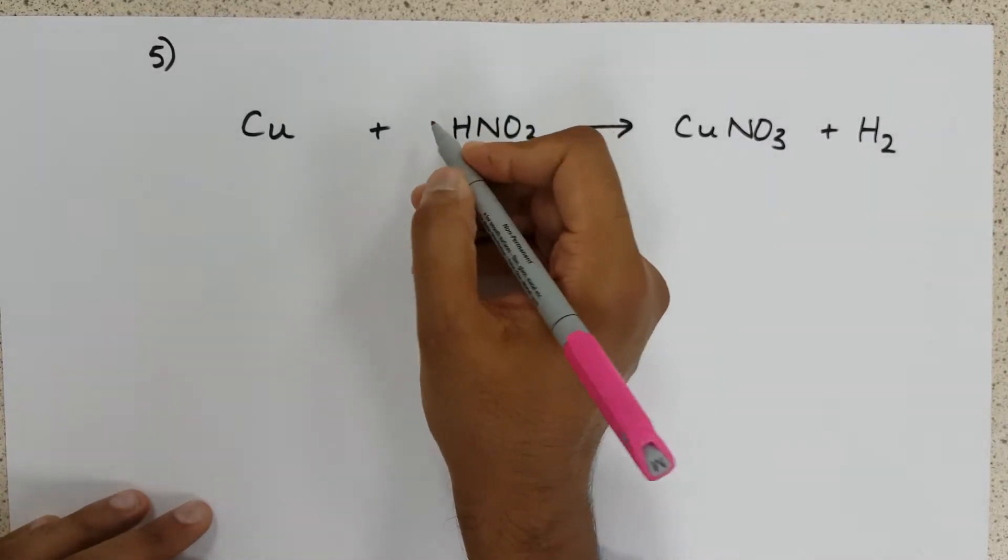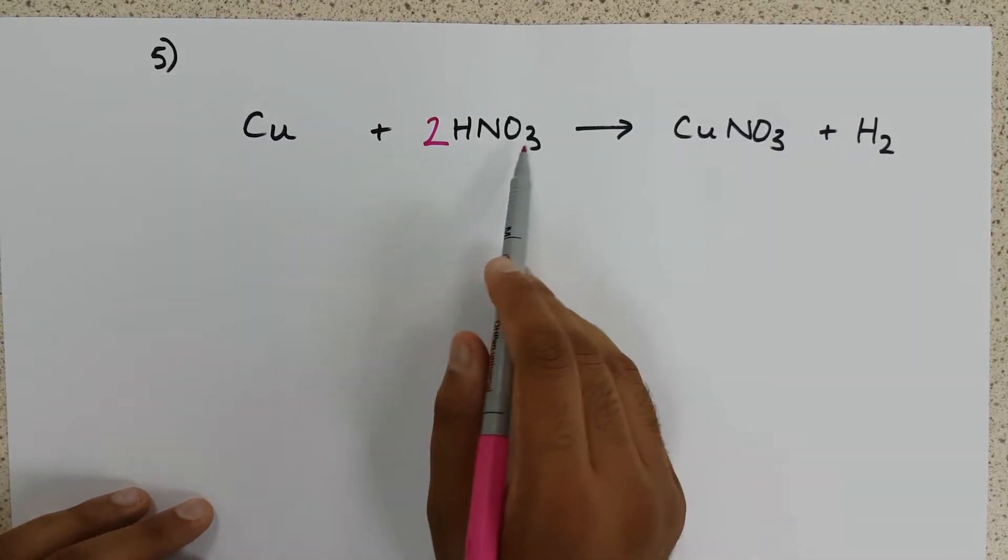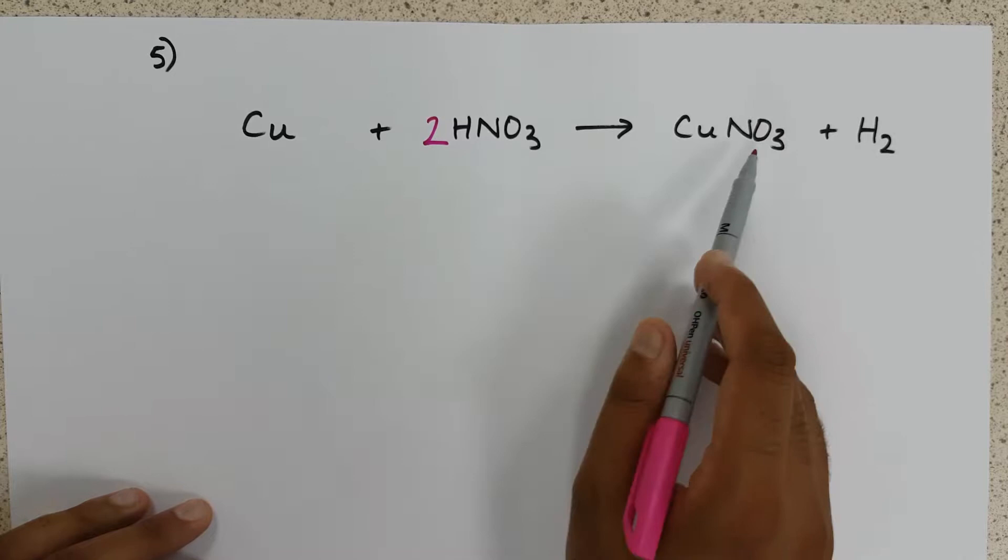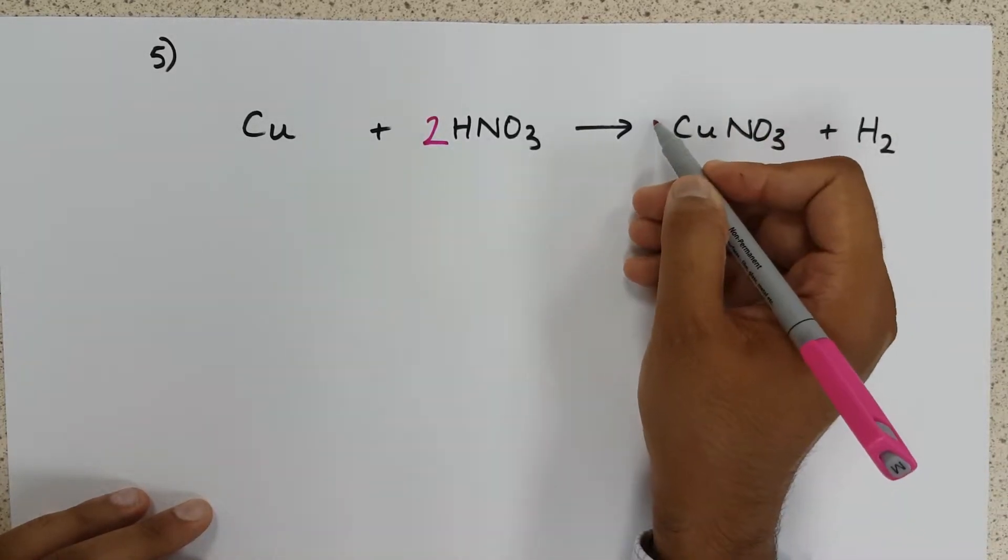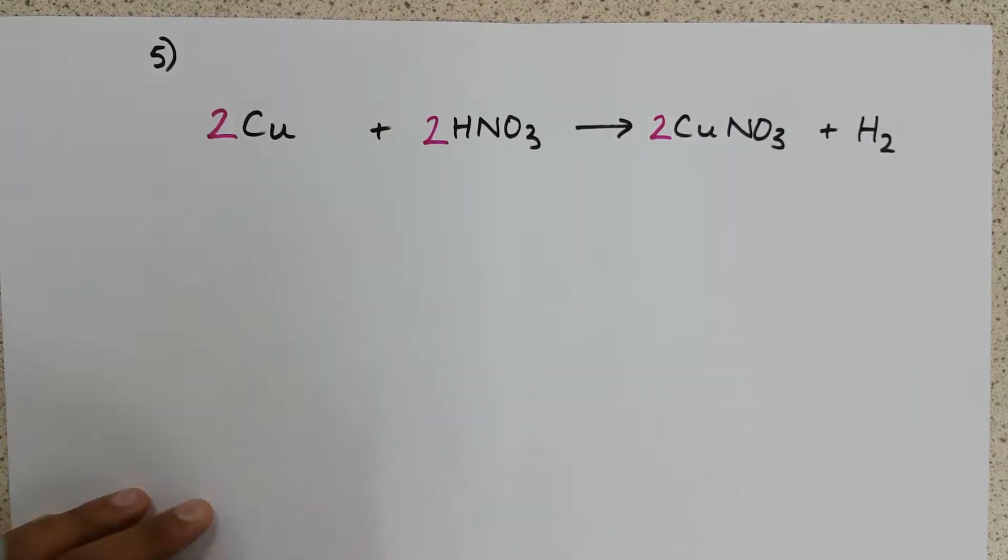So if we remedy that, let's put a two in front, two hydrogens, two hydrogens. We now have two nitrate ions, and only one on the right-hand side, another two, and finally two coppers.